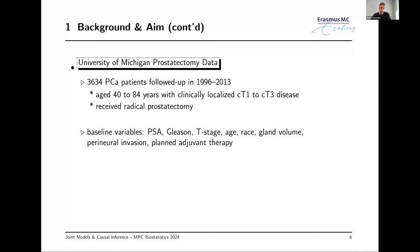We use data from the University of Michigan: approximately 3,600 patients diagnosed with localized cT1 or cT3 cancer, followed from 1996 to 2013, aged between 14 and 84 years old, all of whom received prostatectomy. We have many baseline covariates available, including PSA before surgery, the Gleason score from biopsy, cancer stage, age, race, gland volume, and a few others.